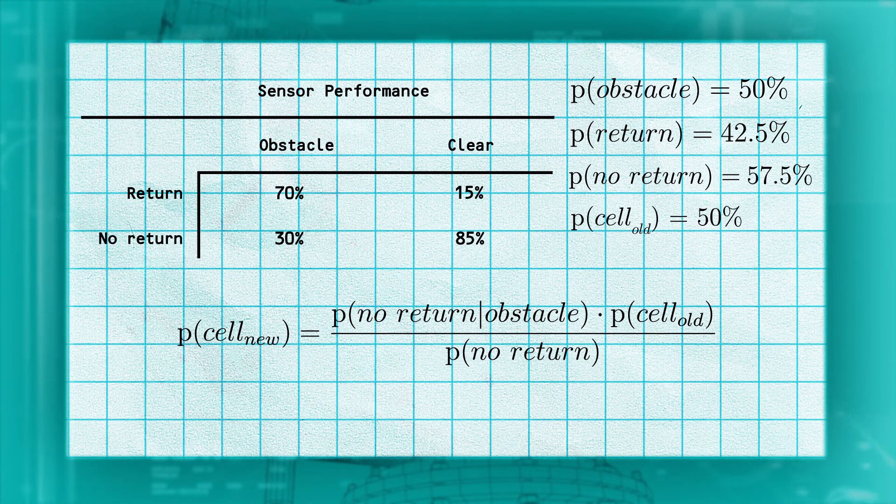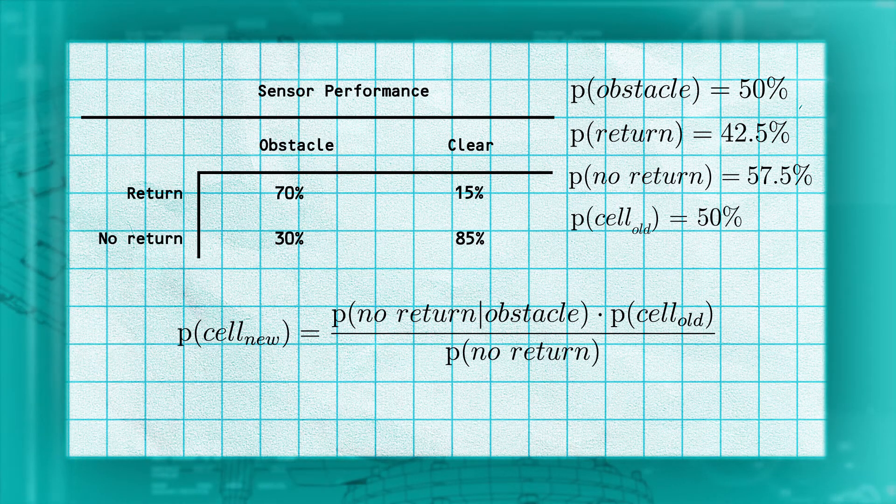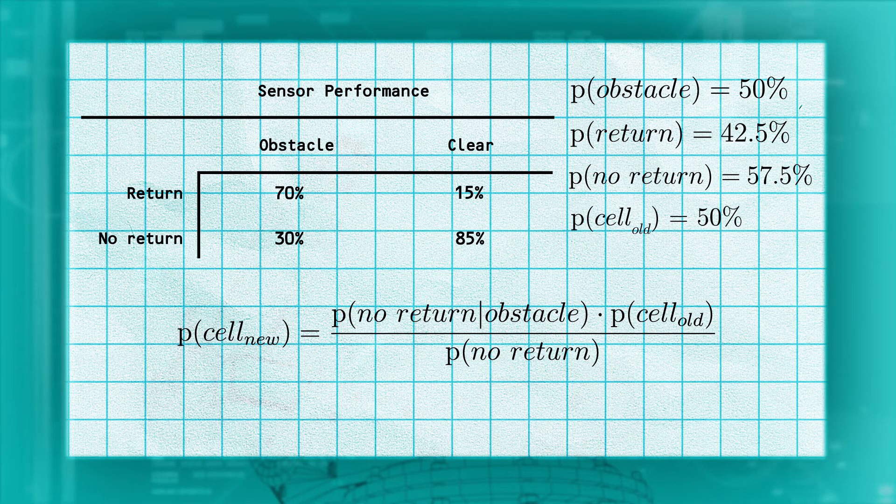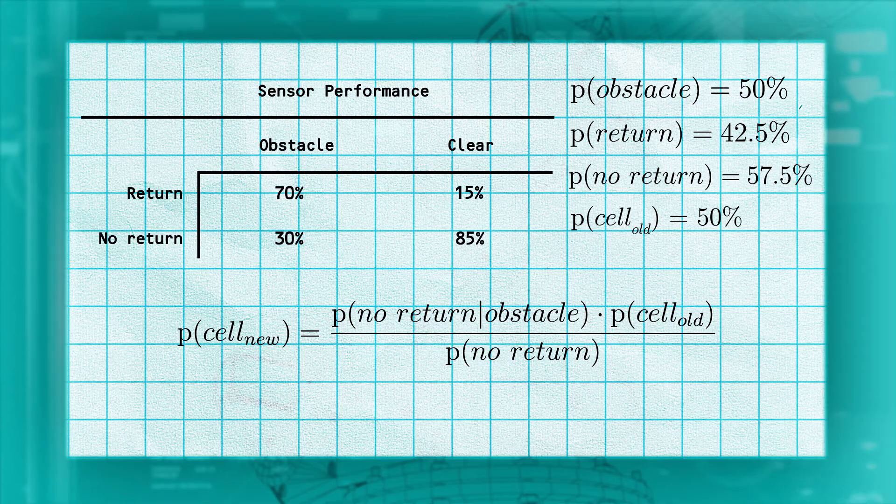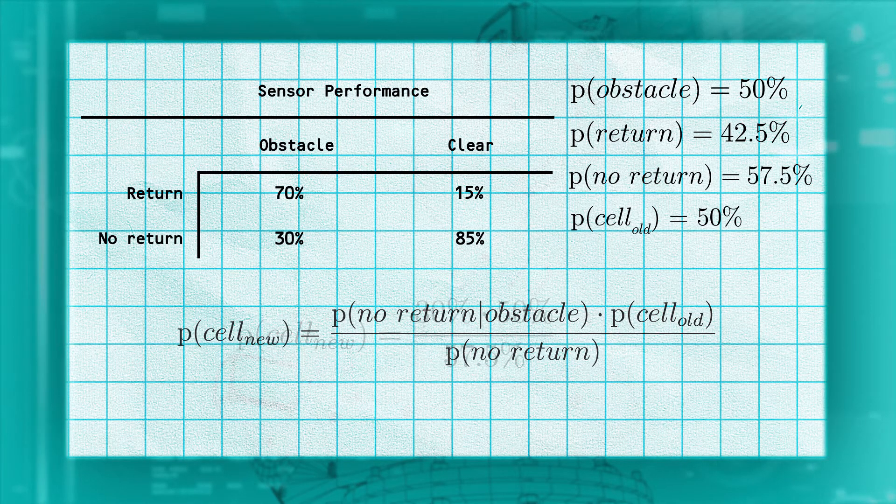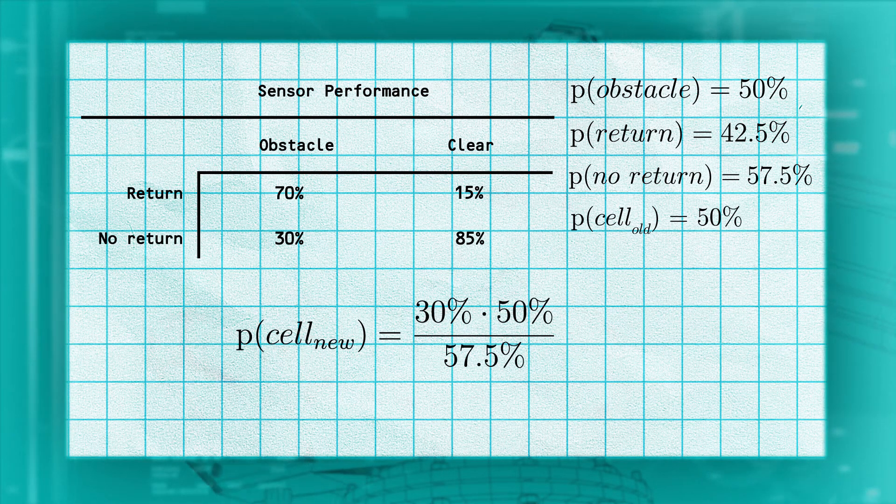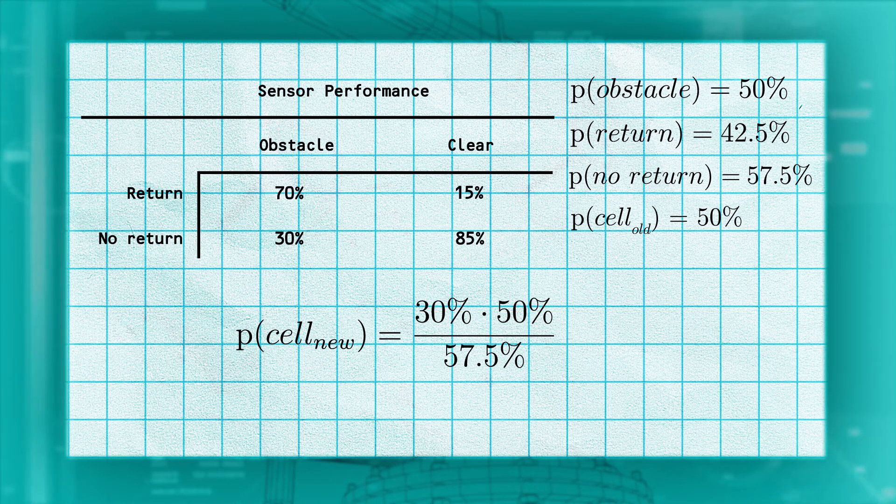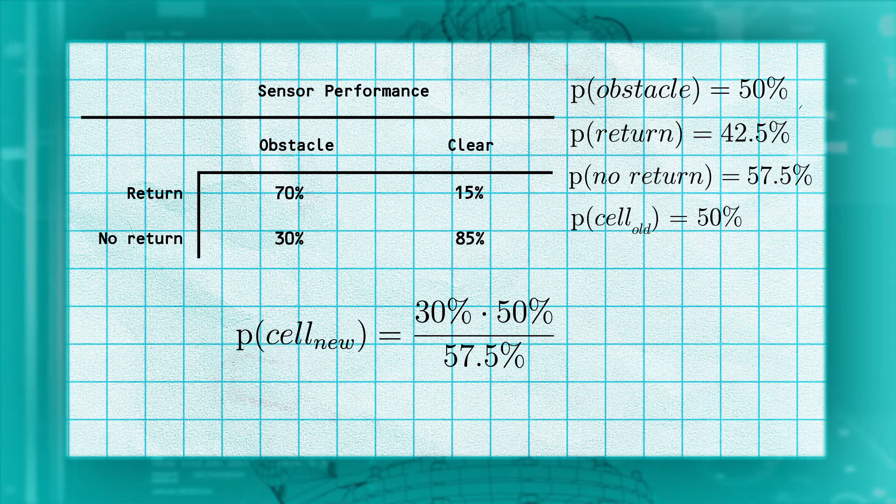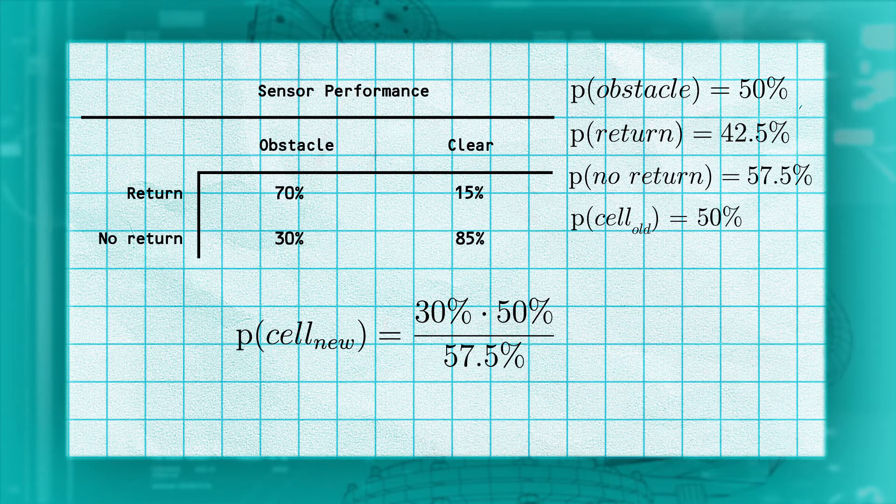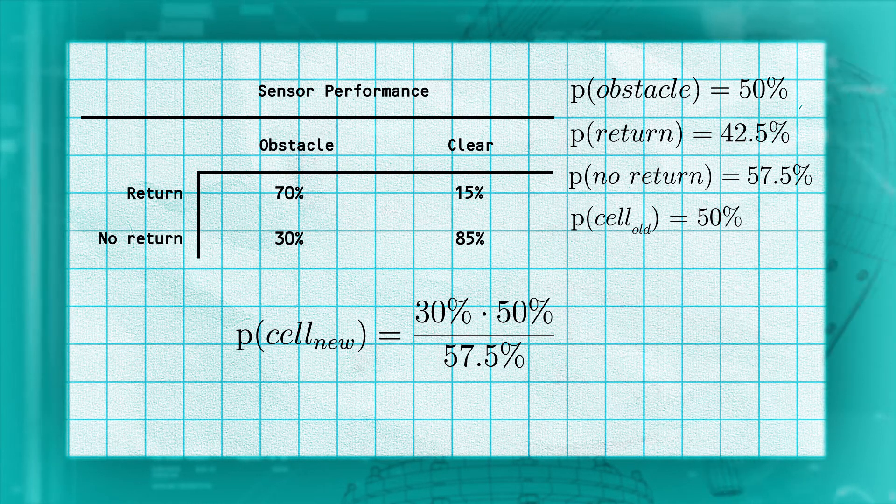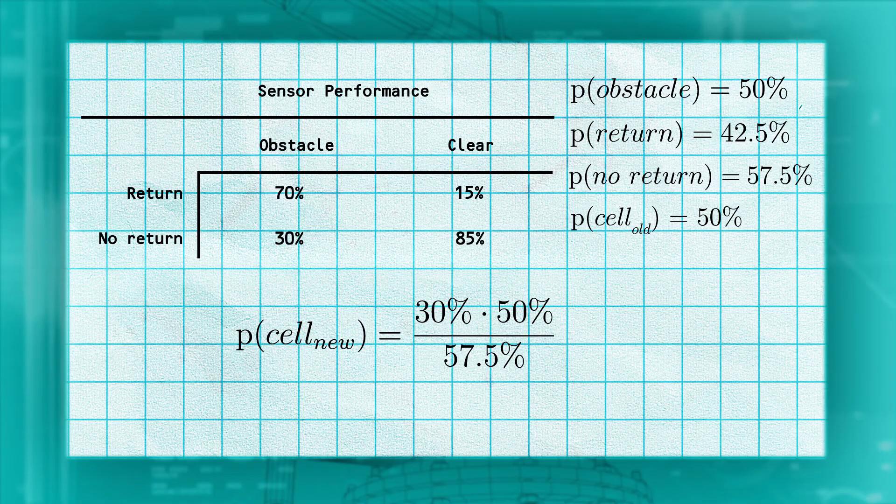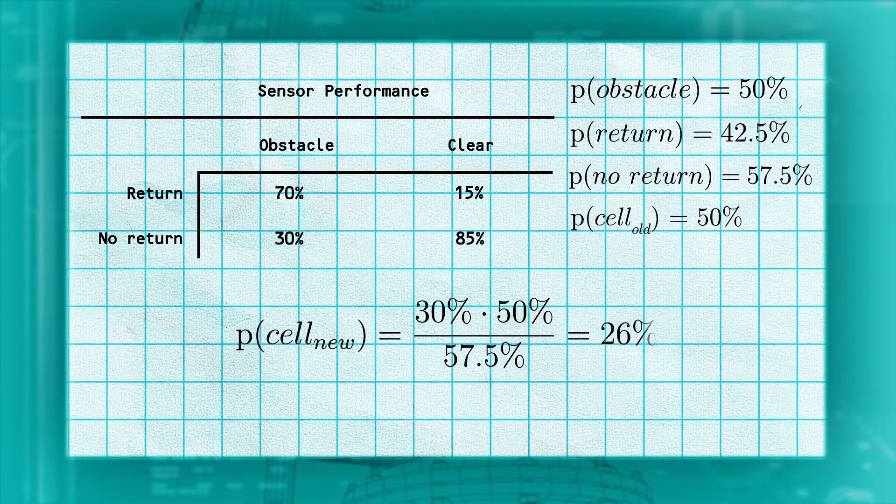Which is equal to the probability of not getting a return given an obstacle, which we know from our chart is 30%, times the current value of our cell, which is 50%, divided by the probability of getting no return, which we just calculated to be 57.5%. Combining and solving for this gives us 26%.